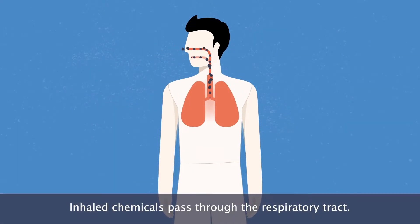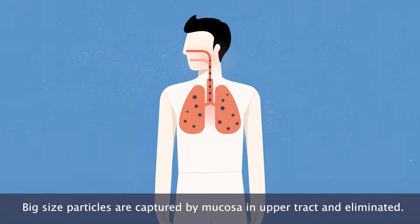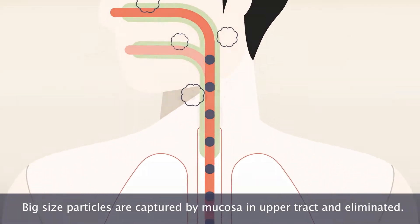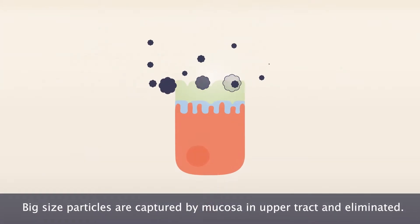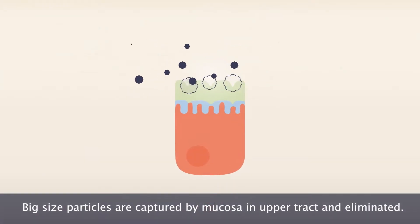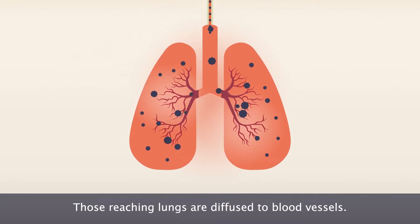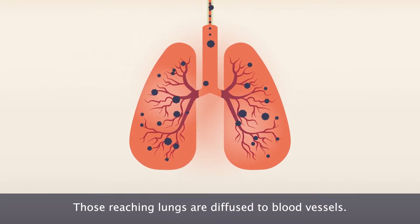Inhaled chemicals pass through the respiratory tract. Large size particles are captured by mucosa in the upper tract and eliminated. Those reaching the lungs are diffused to blood vessels.